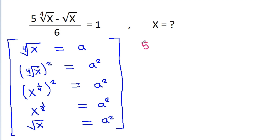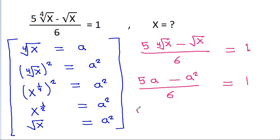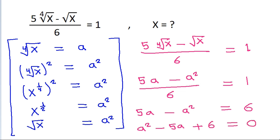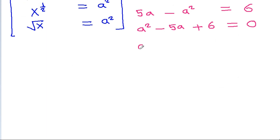We have 5 times the 4th root of x minus the square root of x divided by 6 is equal to 1. Substituting, the 4th root of x is a and the square root of x is a squared, so 5a minus a squared by 6 equals 1. This gives 5a minus a squared equals 6, and rearranging: a squared minus 5a plus 6 equals 0.